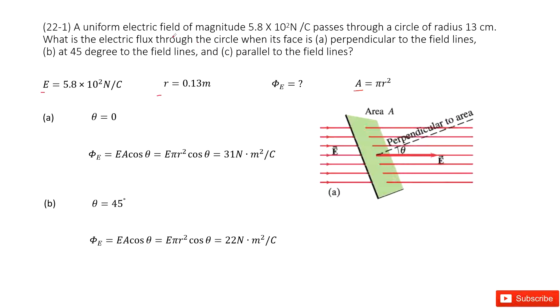Now we need to find electric flux in several situations. First one, its face is perpendicular to the field lines. So you can see this picture. The field lines are just horizontal to the right. And then if this area is perpendicular to the field lines, that means theta is equal to zero. Agree? Yes, theta is zero. So as the definition about the electric flux, EA cosine theta, so we input all the quantity inside, get the answer there.